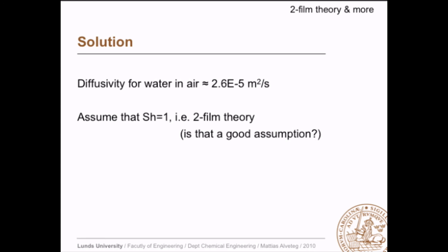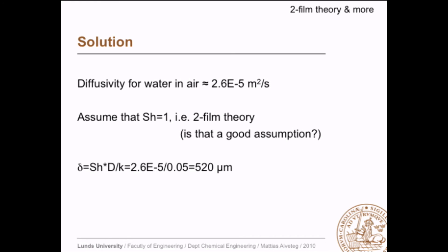Is Sherwood number = 1 a good assumption? One way to check is to look at the vapor pressure at that temperature to see if the concentration is low. There may also be other circumstances making the two-film theory a poor model. But assuming Sh = 1, the film thickness equals Sherwood number times diffusivity divided by mass transfer coefficient, giving 520 micrometers. Note that diffusivity divided by film thickness has units of m/s, just like the mass transfer coefficient.